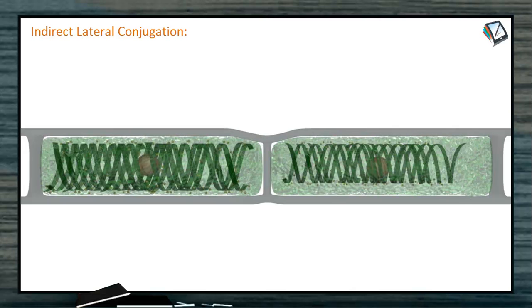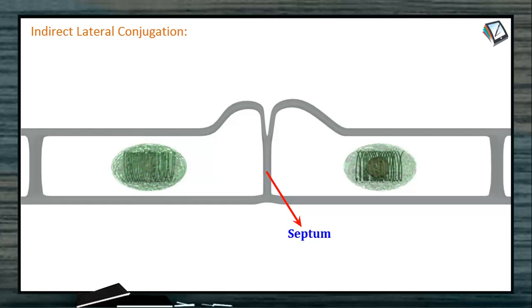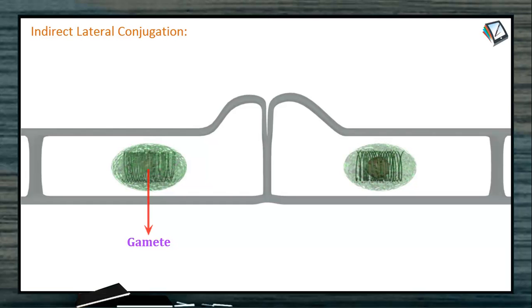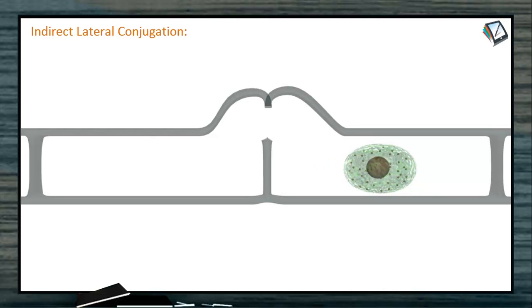In lateral conjugation, the cells present in one filament participate in sexual reproduction — the sexual reproduction takes place between two adjacent cells. Each cell produces a protuberance just adjacent to the septum and they grow in opposite directions. The protoplast rounds off forming a gamete. These two lateral protuberances join with each other, and at the place of joining the cell walls dissolve, establishing a lateral conjugation tube. One gamete moves into another cell and fuses. The zygote is found in one cell. This is indirect lateral conjugation.